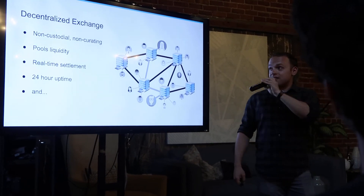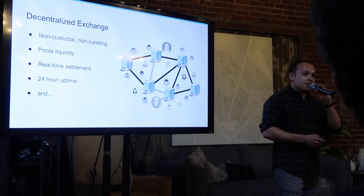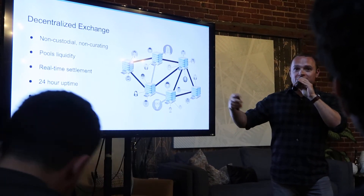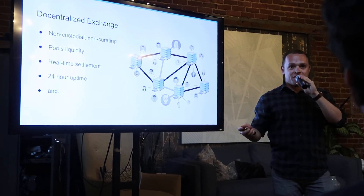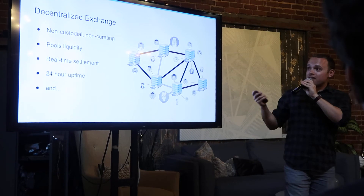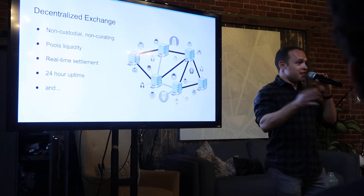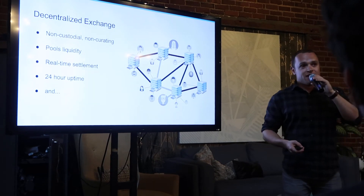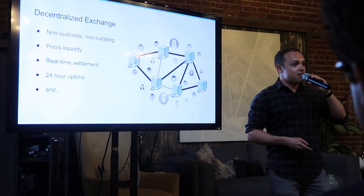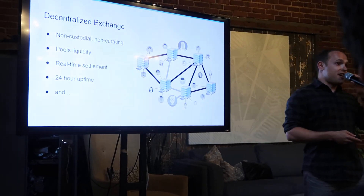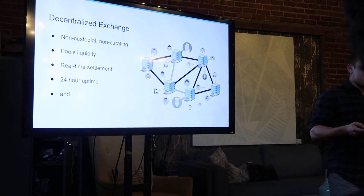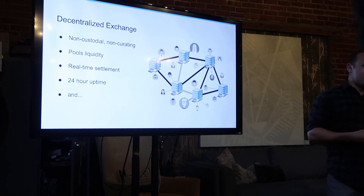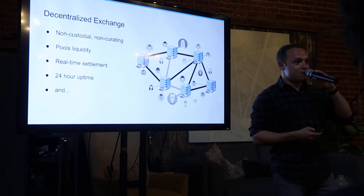The decentralized exchange pools liquidity into one place. Today you have pockets of liquidity for Bitcoin spread across this exchange and that exchange, and you can't access all of that liquidity in one place. The great thing about a decentralized exchange like Stellar's is that it pools all of that liquidity for a particular asset into one central exchange. It also, of course, offers real-time settlement. One of the nice things about Stellar is that it's very efficient — transactions are very fast. When you execute a trade, it's settled in three to five seconds, five seconds at the max. And of course it's open 24 hours a day — not subject to bank holidays or nighttime schedules.